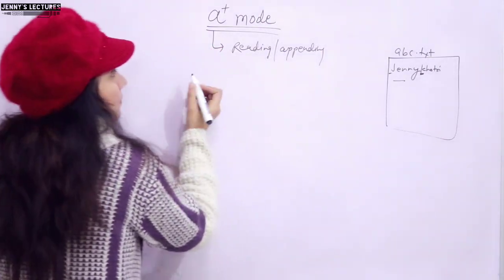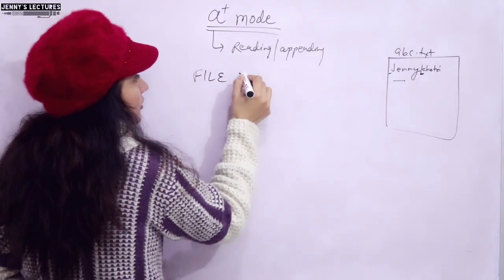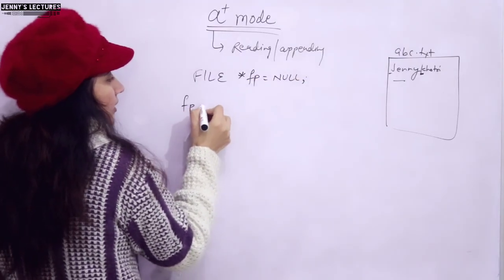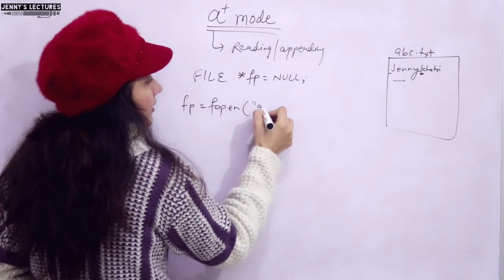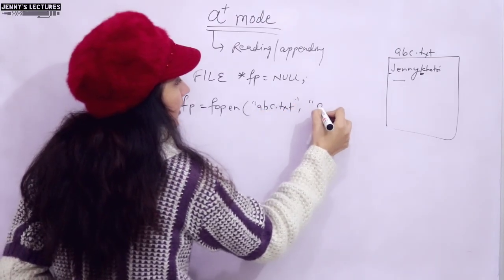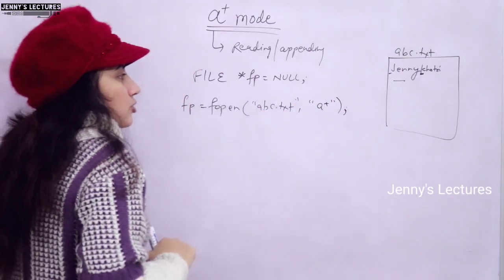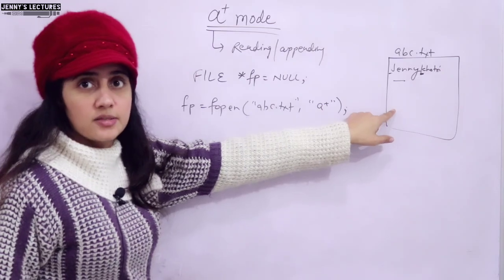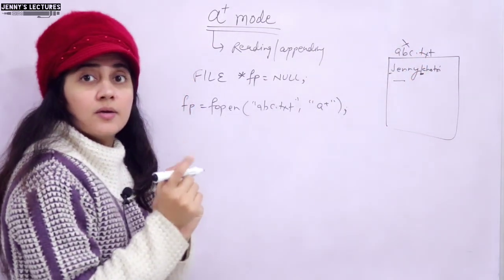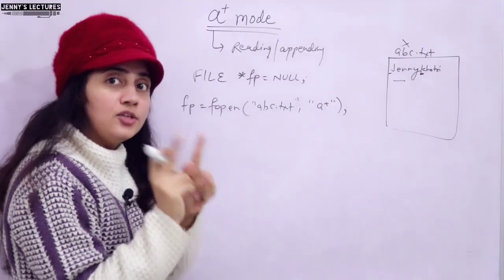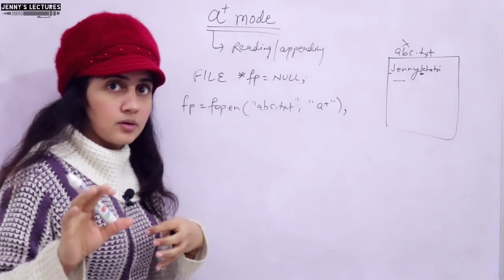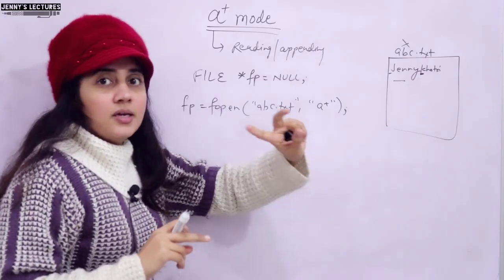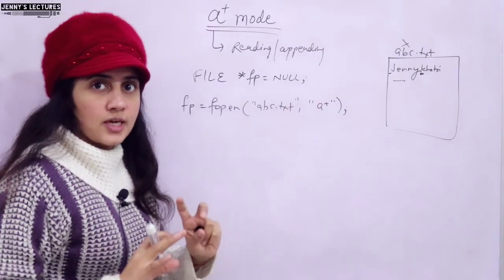Now, in the program, we first create a file pointer initialized to null, then open the file using fopen with the name abc.txt in A plus mode. This will open the file for both reading and appending. If the file does not exist, A plus mode will create a new file. In W plus also, if file does not exist, it will create a file. But in R plus, if the file does not exist, it will not open a file — it will return null.